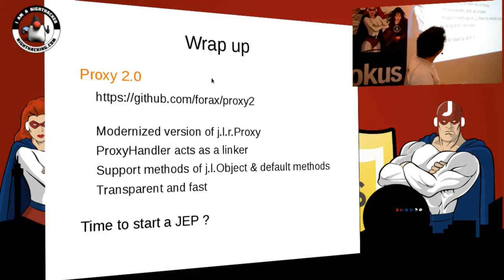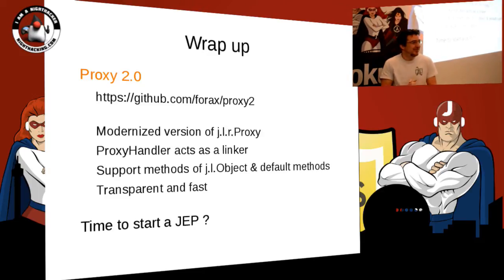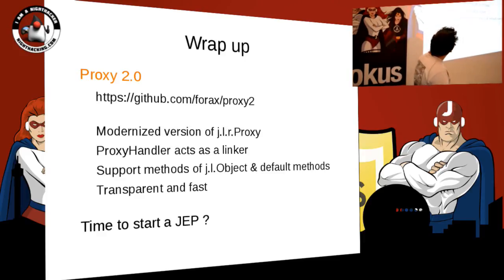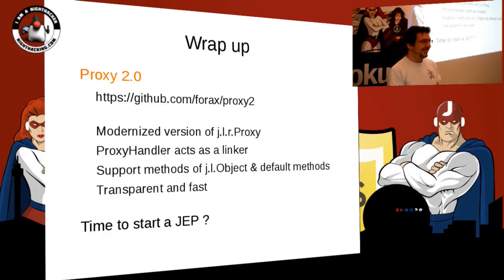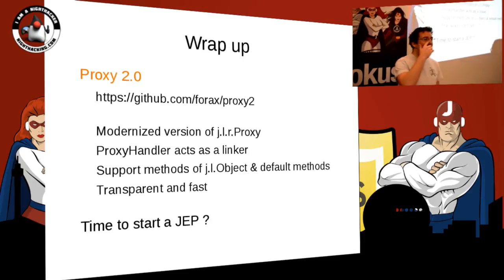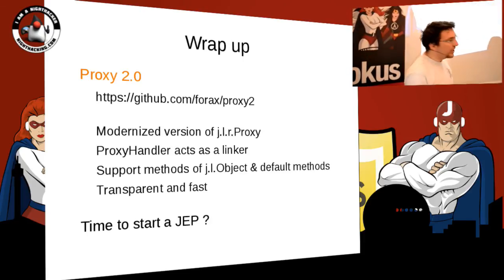To finish: the code is freely available on GitHub. It's a modernized version of java.lang.reflect.Proxy. It uses the proxy handler as a linker — not in the hot path. It supports java.lang.Object methods and default methods. It's transparent and fast. I haven't done any formal benchmark — I just checked that the JIT was able to fully inline the whole thing by checking the generated assembly code.